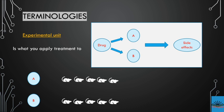Now let's talk about the experimental unit. Whenever you are doing an experiment — for example, looking at the effect of Drug A or Drug B on side effects — you apply the drug to an animal or human. Each individual human, or group of humans, would be called the experimental unit. Essentially, the experimental unit is what you apply your treatment to.